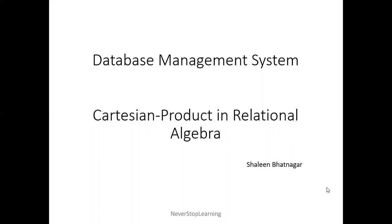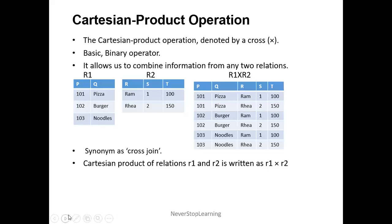Hello students. In the series of learning database management system, our today's topic is Cartesian product in relational algebra. Cartesian product allows us to merge two relations, meaning two tables. A Cartesian product operation is denoted by a cross symbol.